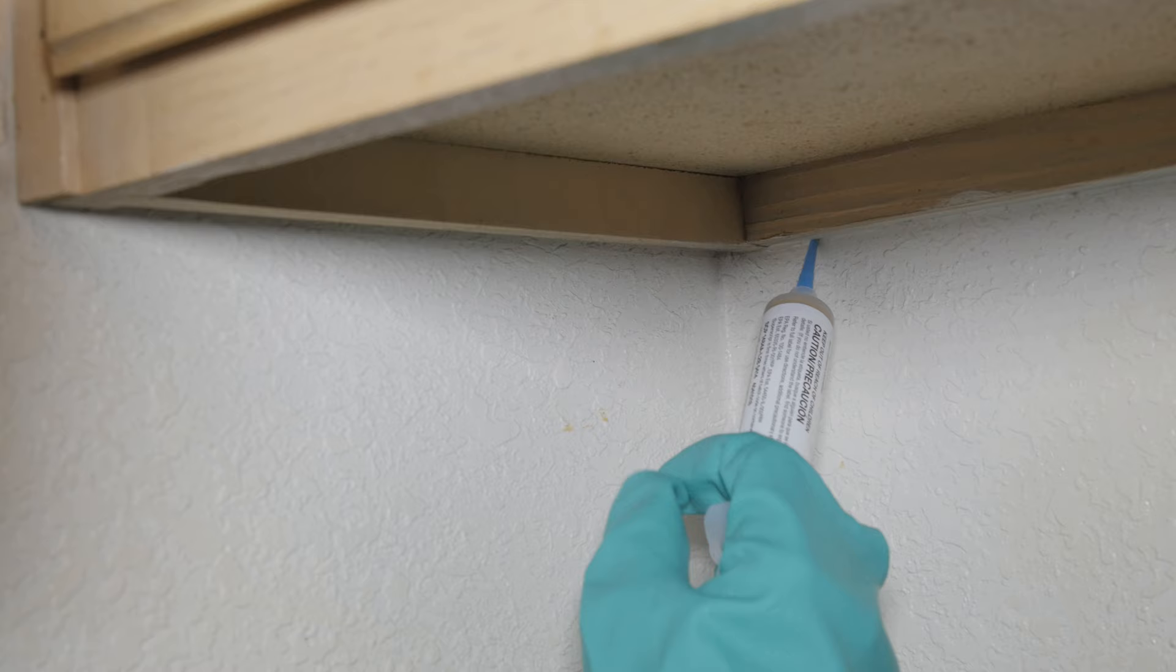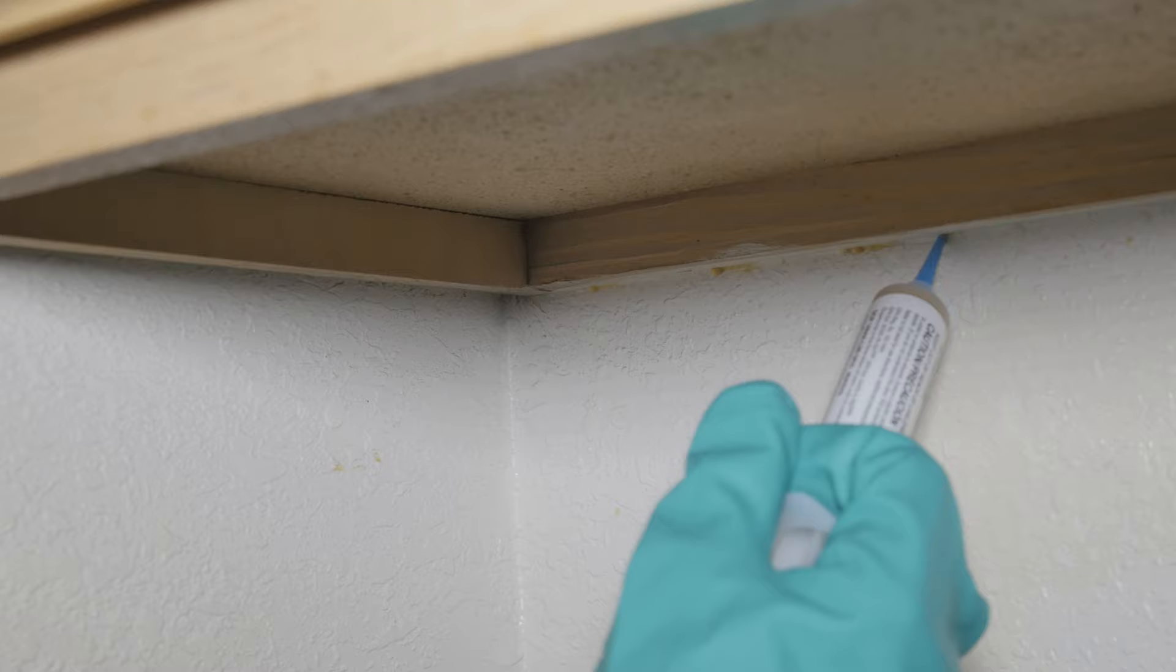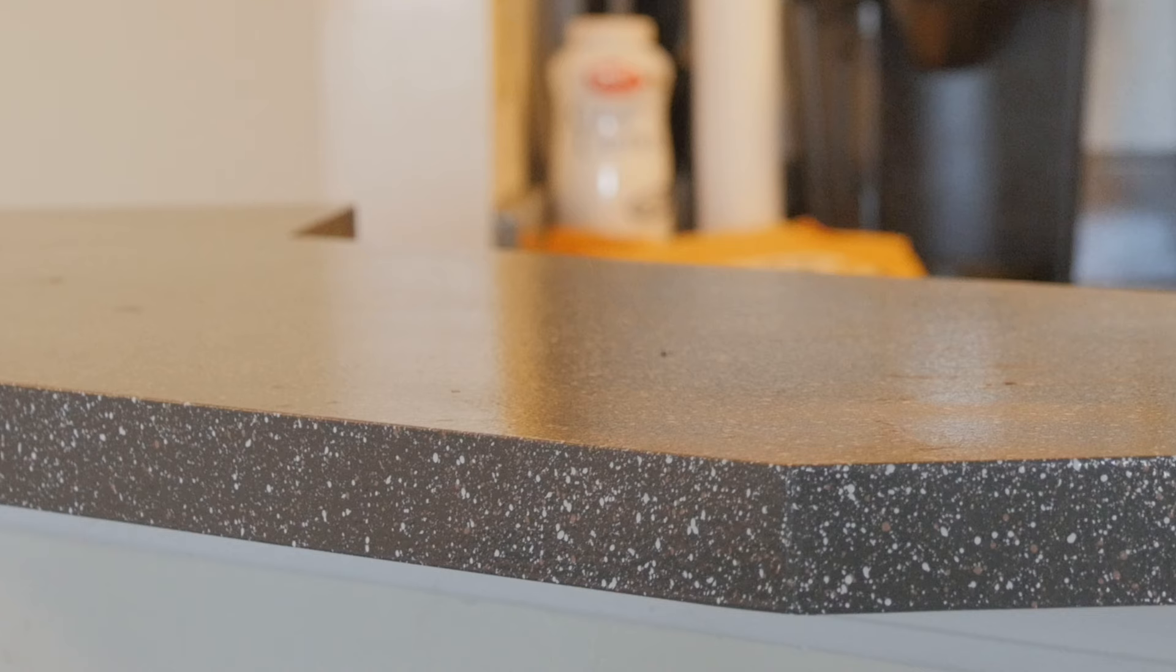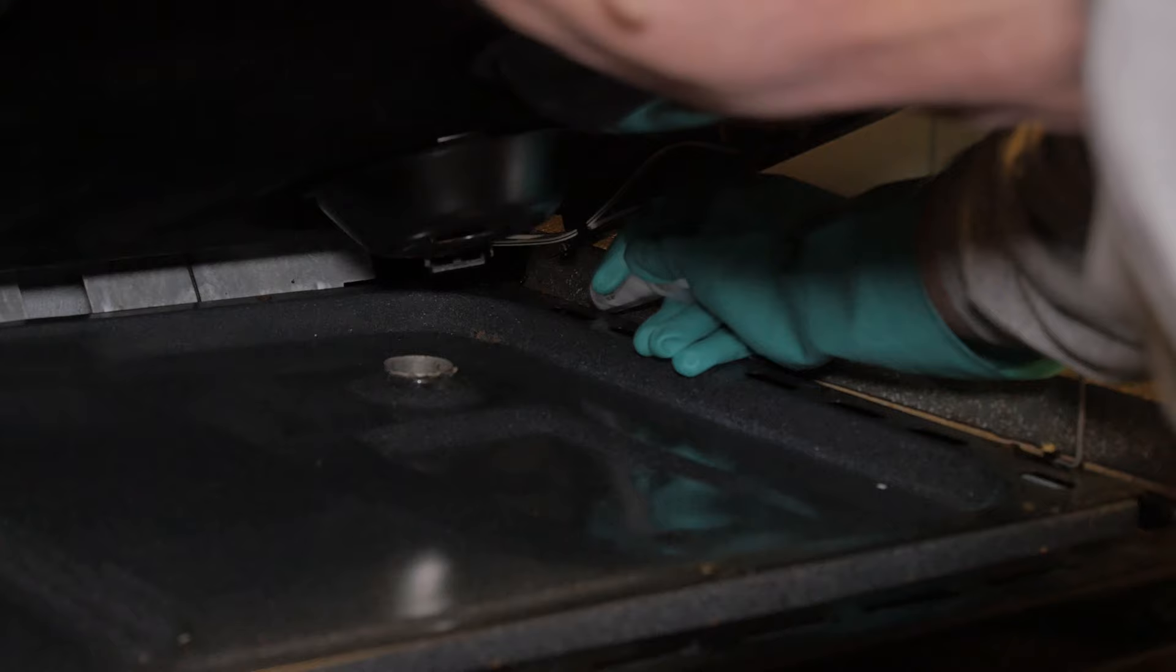Apply gel along the crack where the cabinets are connected to the wall and on the side and underneath each cabinet. If there is a lip where the countertop meets the cabinet, apply the gel every 8 to 10 inches along the underside of the countertop, but not on the top of the counter where food will be prepared.